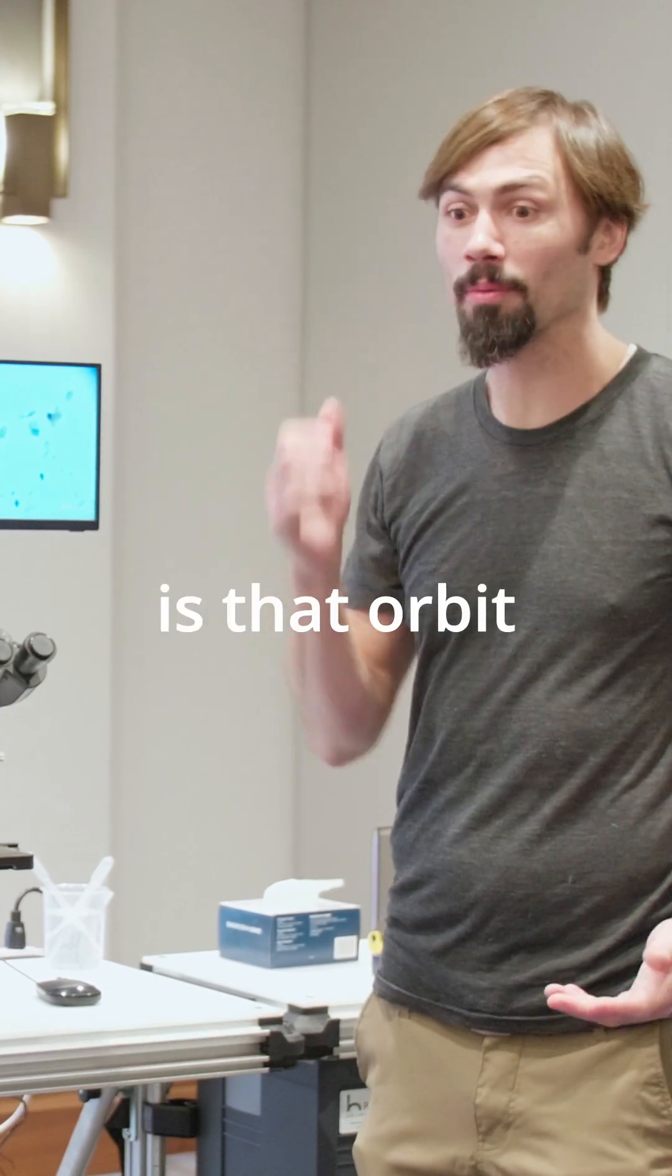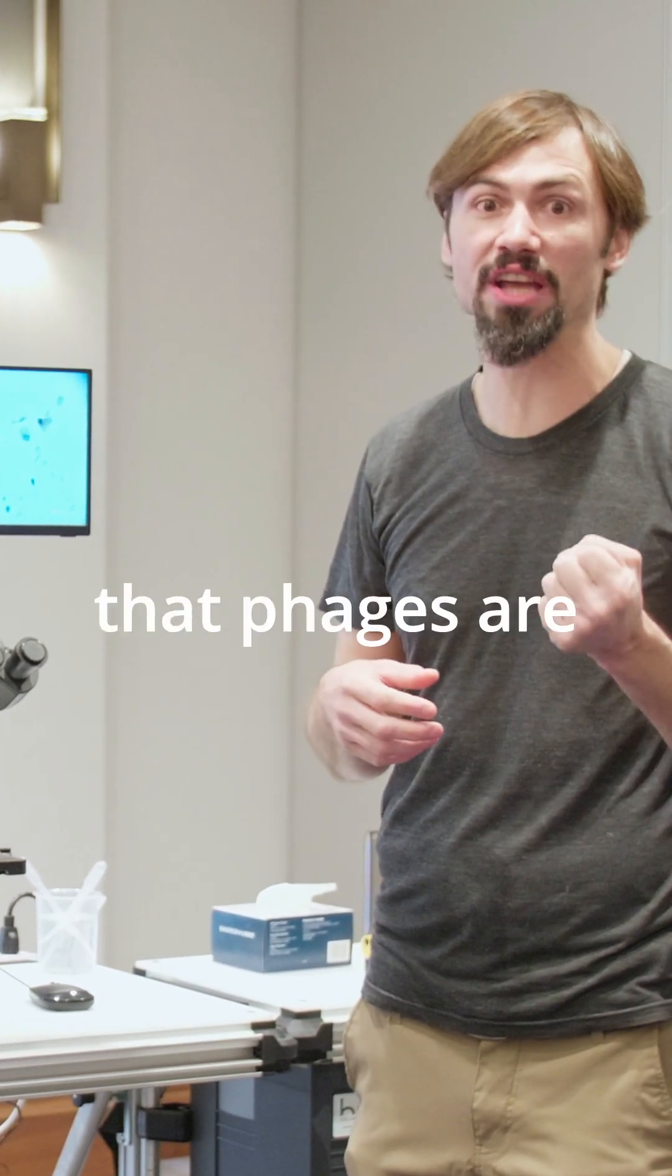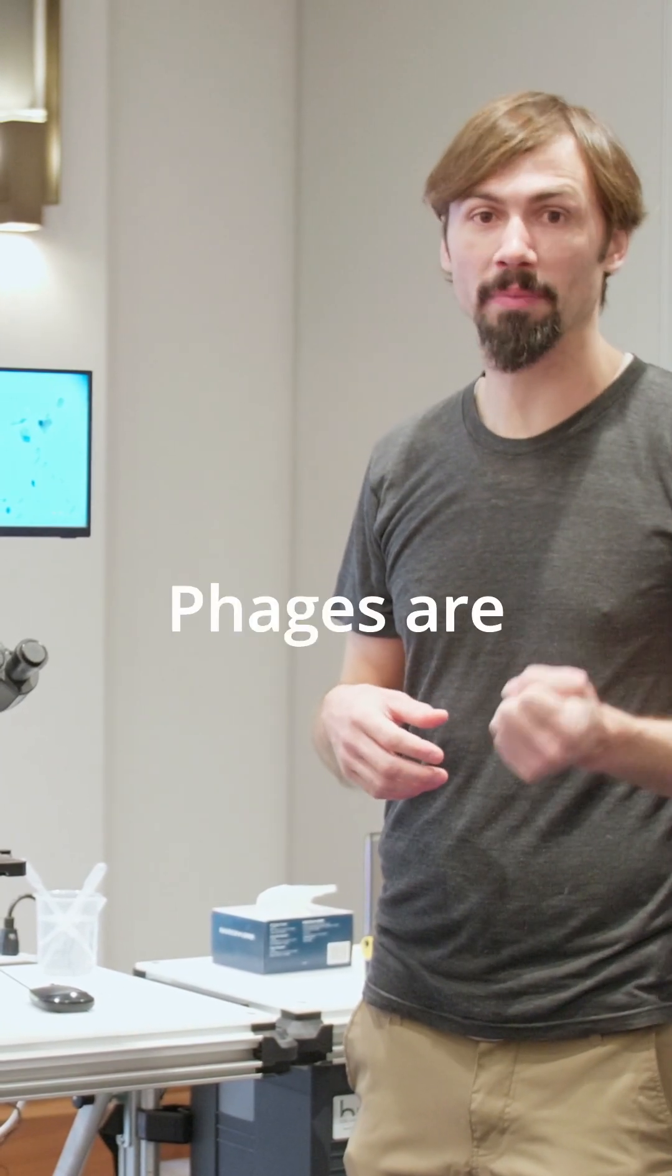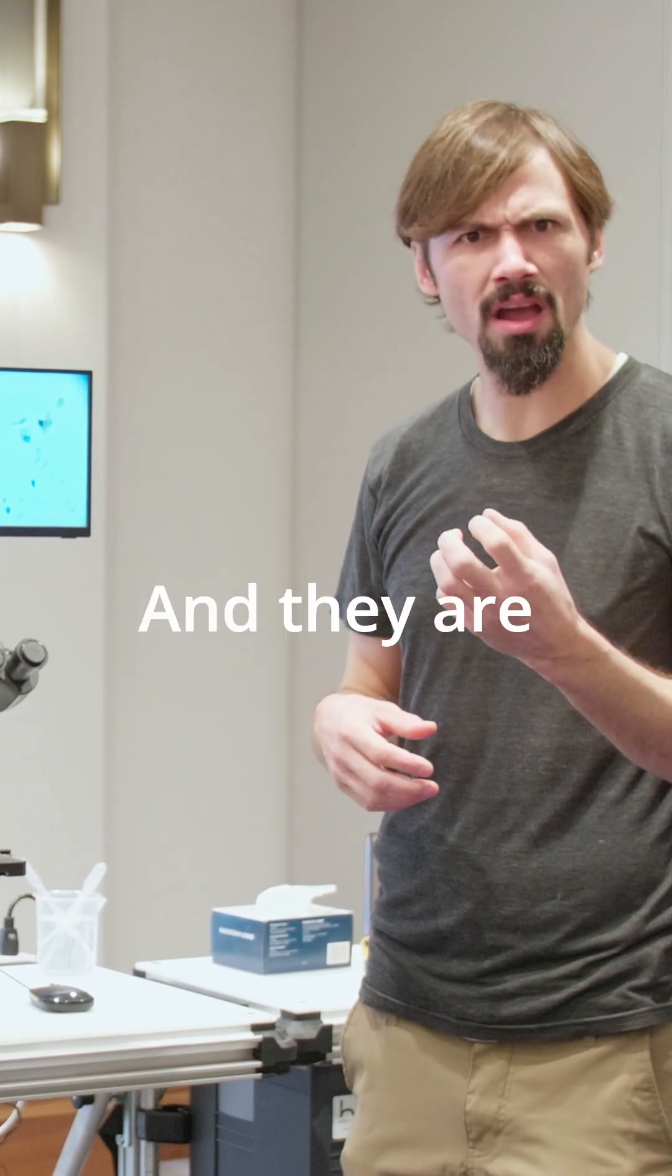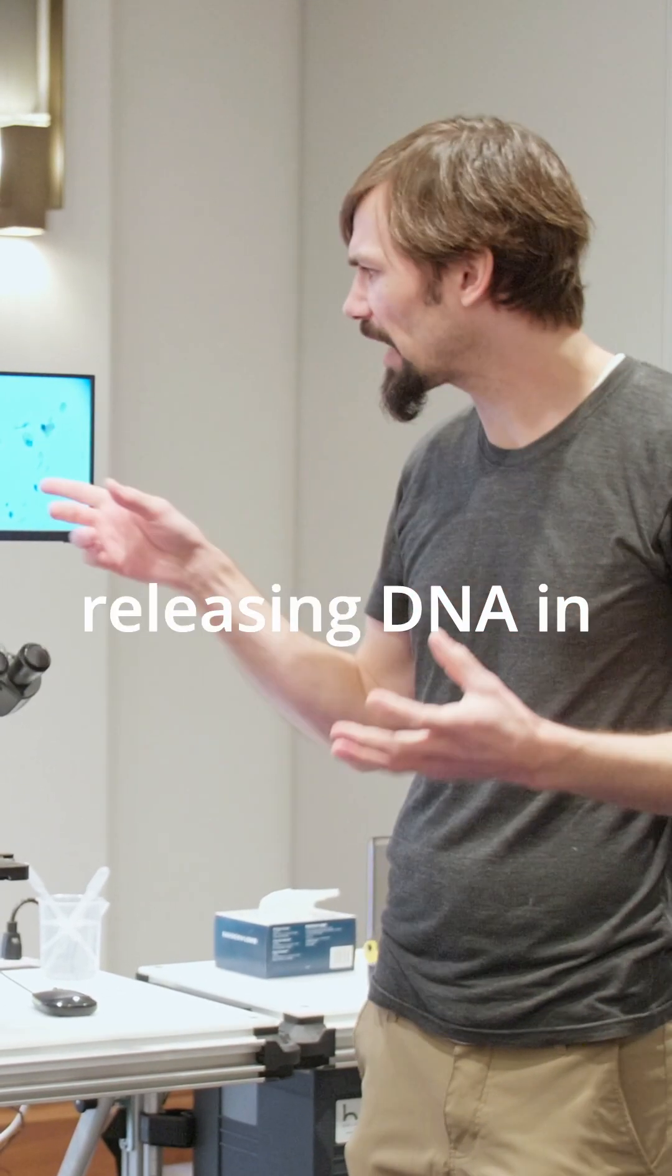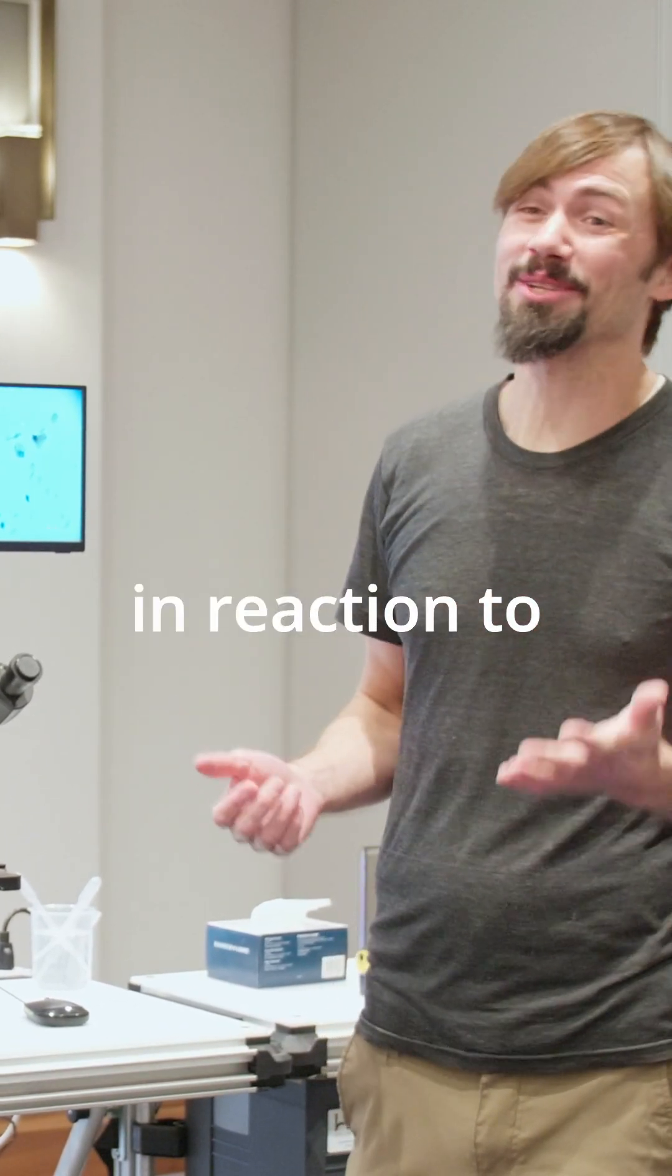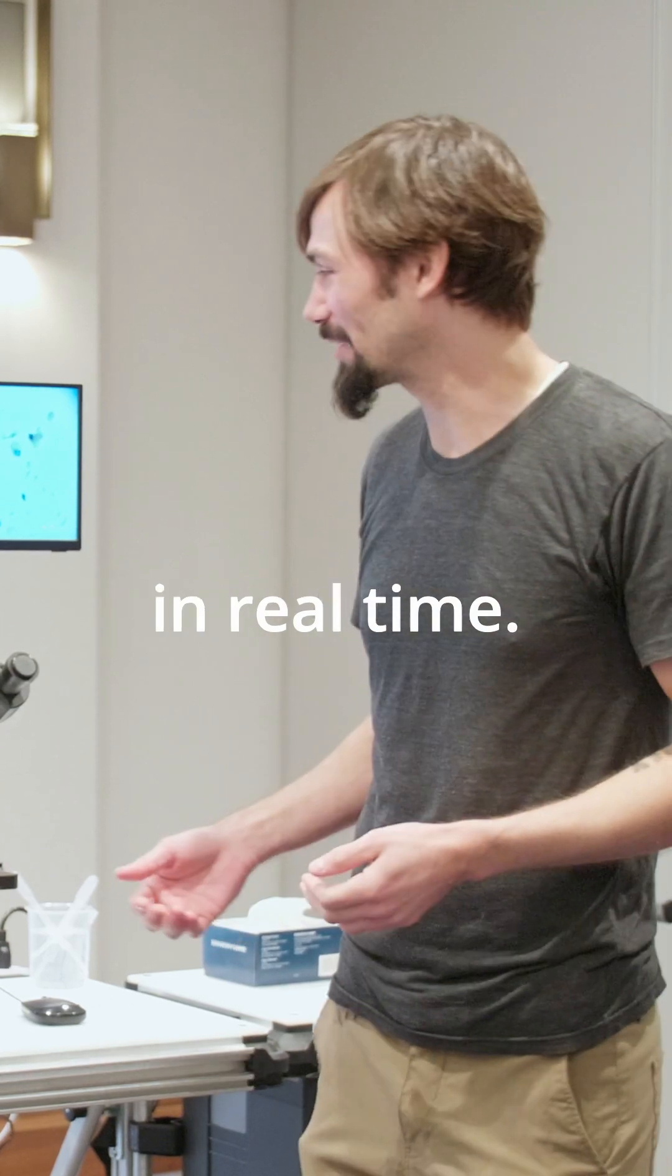And what's crazy is that orbit contains pieces of DNA that phages are holding. Phages are basically viruses for bacteria and fungi. And they are releasing DNA in conversation, in communication, in reaction to their environment. They're adapting in real time.